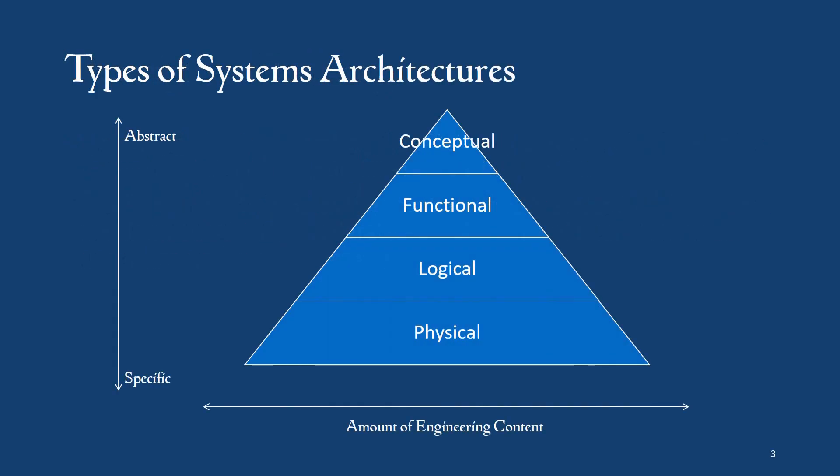We should take a minute and think about the types of systems architectures that are out there. I don't recall the source for this diagram; it is not my own original work. If we consider from most abstract to most specific, it's conceptual, functional, logical, and physical, and the amount of engineering content obviously grows as you move down the pyramid. Keep in mind that we have these multiple layers of architectures that we can consider.